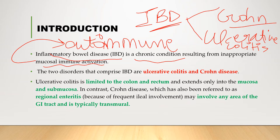Crohn's disease, which is normally referred to as regional enteritis because it frequently involves the ileum, can involve any area of the GIT. It is typically transmural, meaning it affects all four layers of the GIT: the mucosa, submucosa, muscularis layer, and the adventitia or serosal layer.